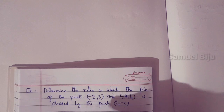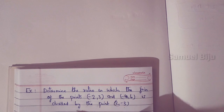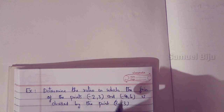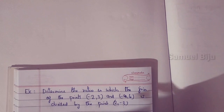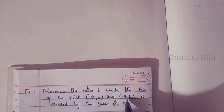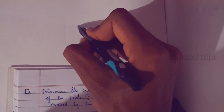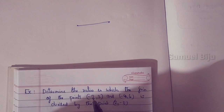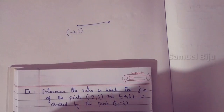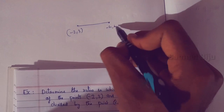Now guys, the next question: determine the ratio in which the join of two points is divided. This time, there is no ratio given — instead, a point is given. We have to find the ratio in which the point splits and divides. The two points are: first point (-2, 3) and second point (-4, 6), and the point that divides them is (2, -3).